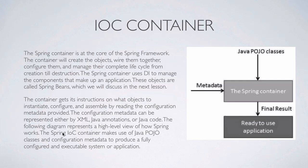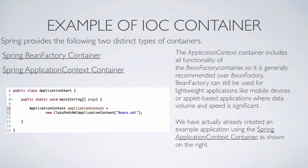Now let's take a look at the final slide. Here we have an example of an IoC container — this is actually the code from our previous lesson. Spring provides two distinct types of containers: the Spring bean factory container and the Spring application context container.